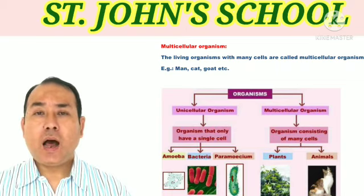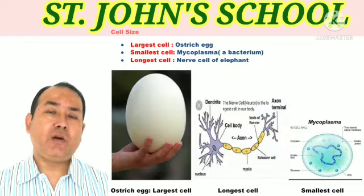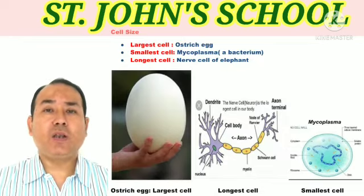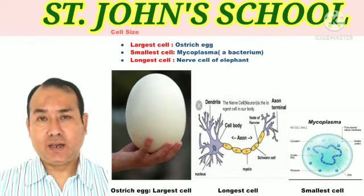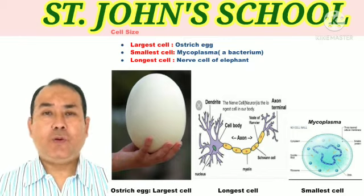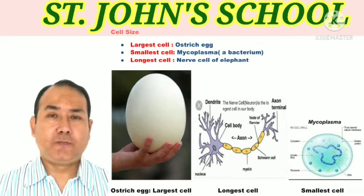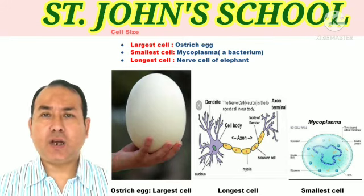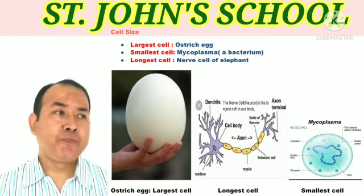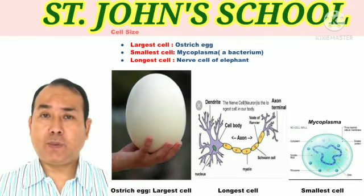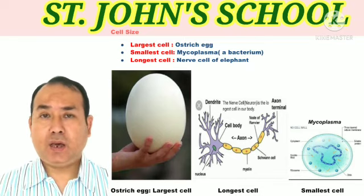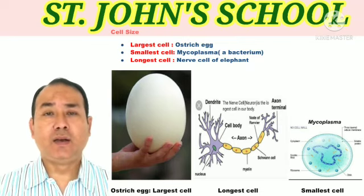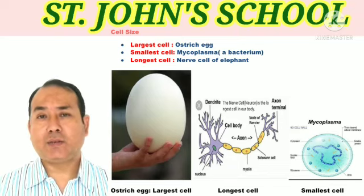Now let us discuss about cell size — how large or how small a cell can be. If you talk about the smallest cell, bacteria are said to have the smallest size. The name of that bacterium is Mycoplasma. Mycoplasma is a bacterium of very, very small size. So if you are asked about the smallest cell, you need to write Mycoplasma.